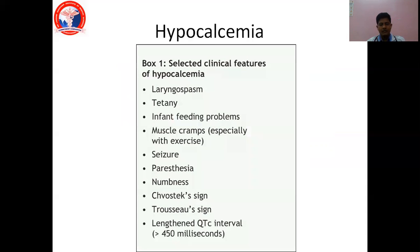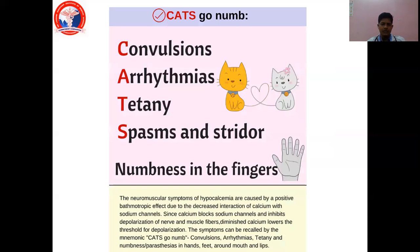Looking at more clinical features: laryngospasm, tetany, feeding problems in the infant, muscle cramps especially with exercise, seizures, paresthesias, and numbness. We have a mnemonic called CATS GO NUMB — basically convulsions, arrhythmia, tetany, spasms and stridor, and numbness in the fingers.